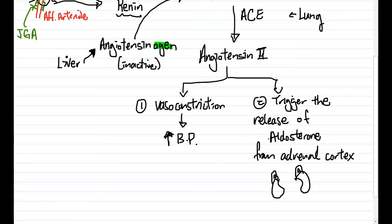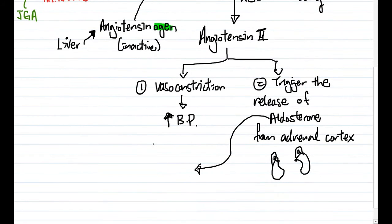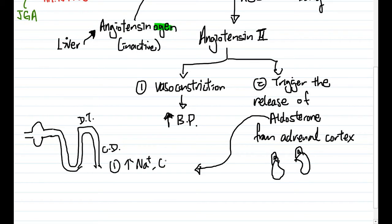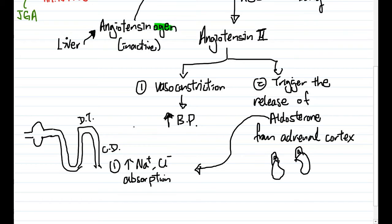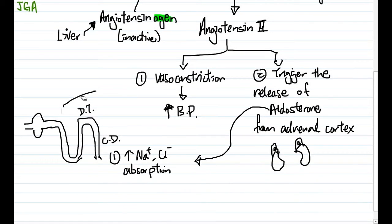So what is the aldosterone going to do to restore the blood pressure? Well, aldosterone is actually going to be distributed throughout the body, but its effect is going to be primarily on the nephrons. Specifically, it's going to act on the distal tubule, as well as the collecting duct of your nephron. If you remember the structure of the nephron, this is the distal tubule, and this is the collecting duct.